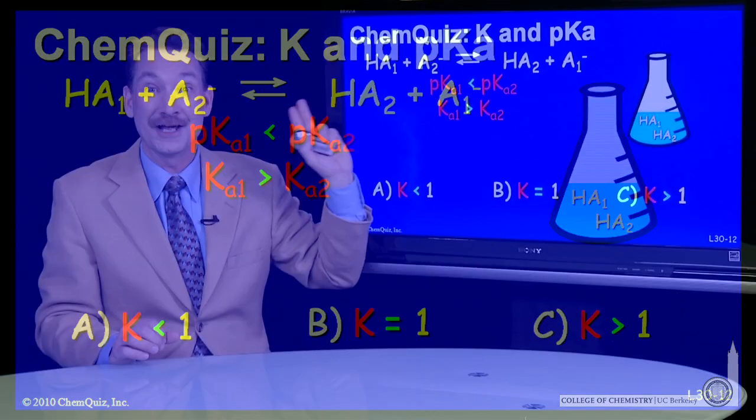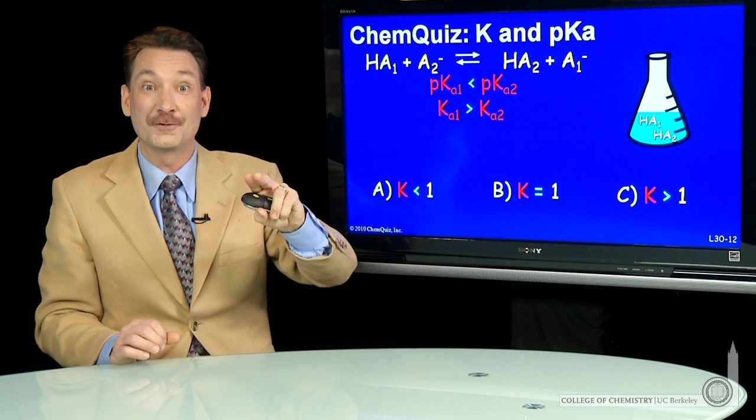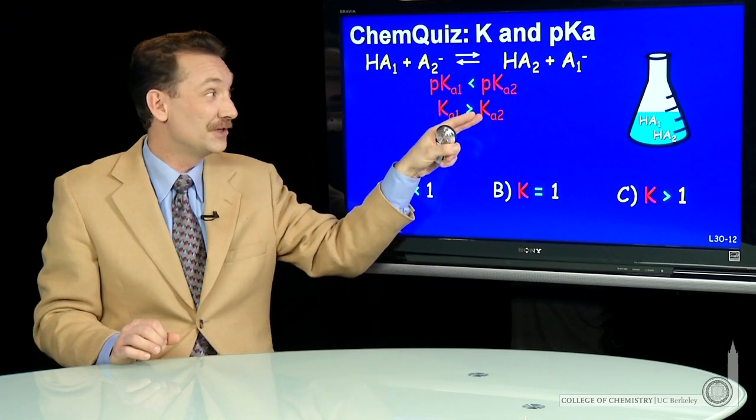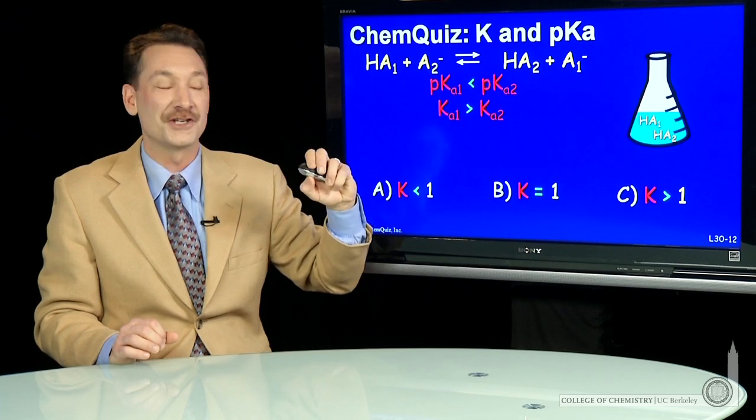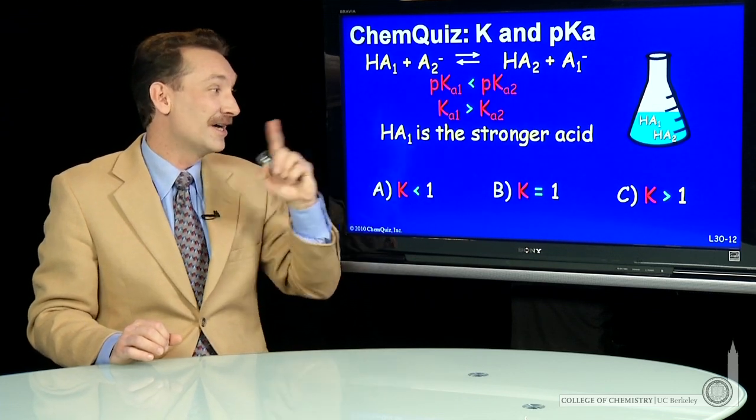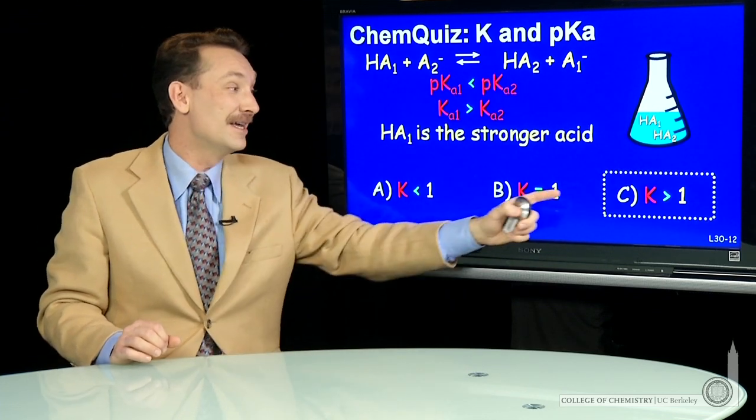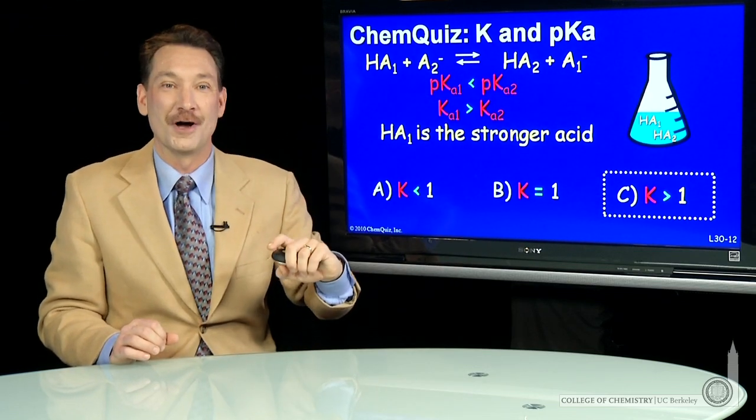And you could do this analytically, and I encourage you to do that. Write out the acid equilibrium expressions. Prove to yourself that if I write this acid equilibrium expression, I can show because HA1 is the stronger acid, the overall k will be greater than 1.